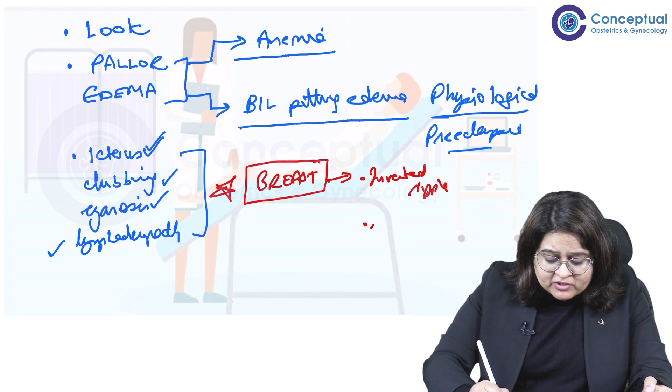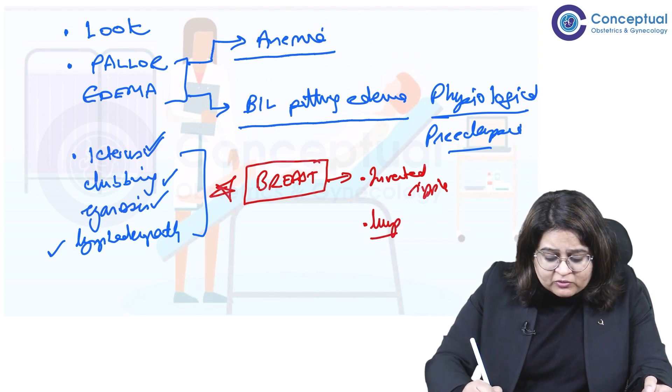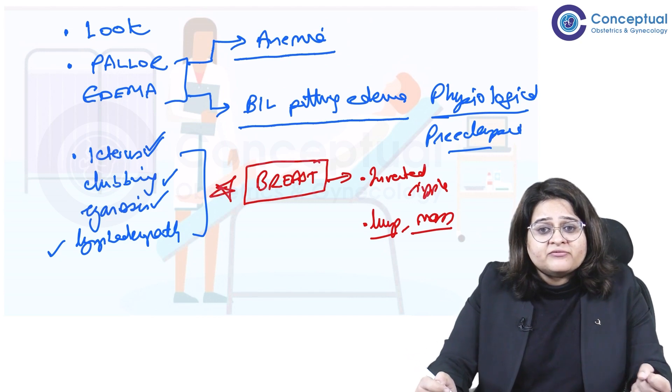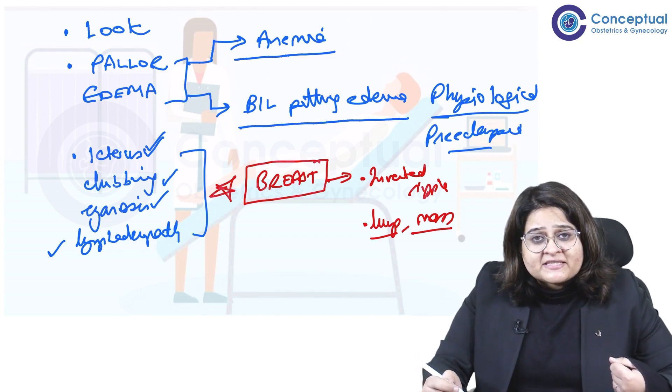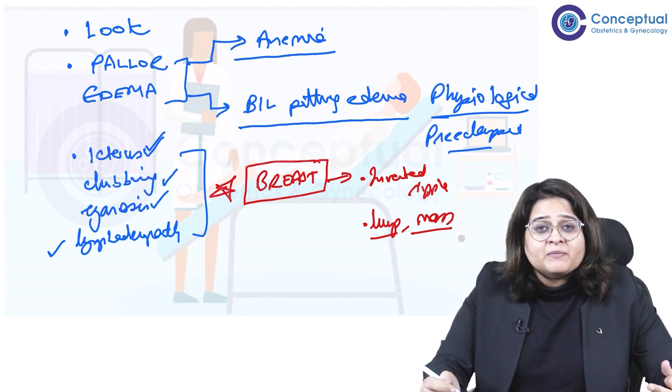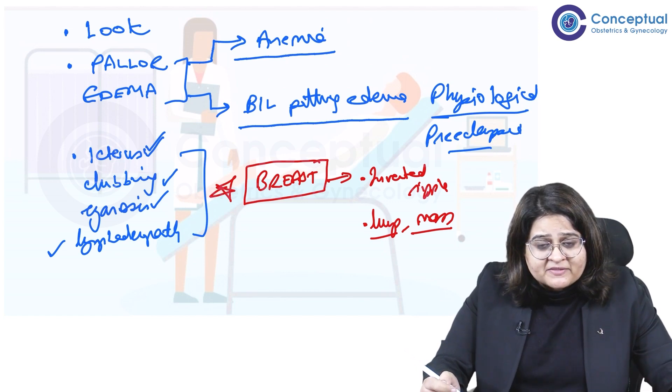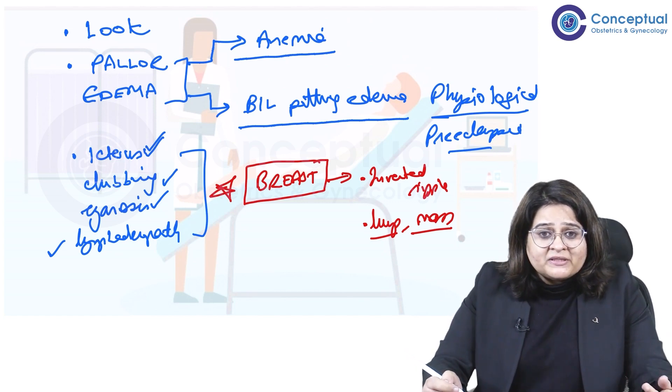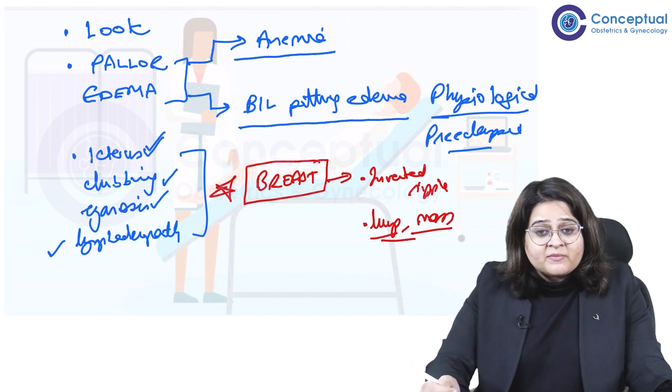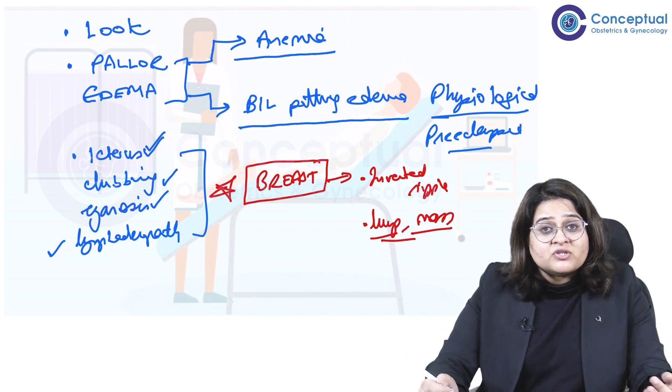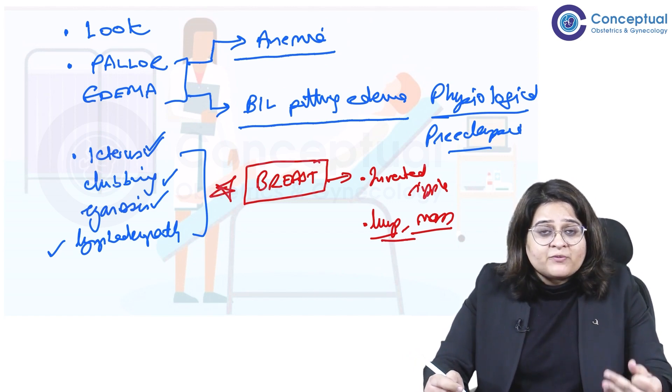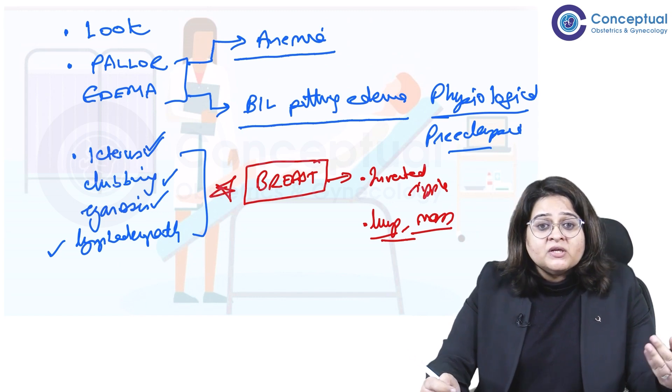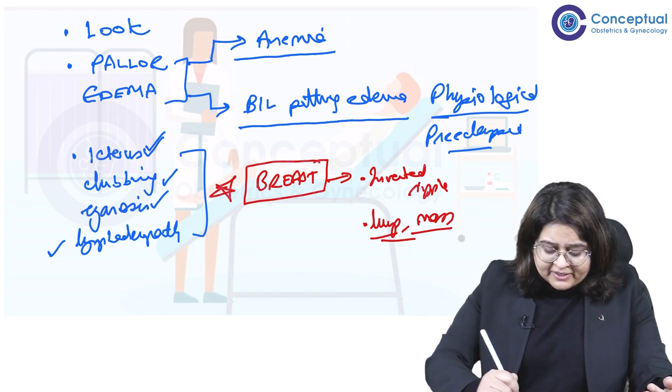Also, you have to of course examine the breast in total. Look for any lump or palpable mass or any axillary lymphadenopathy. There may be an axillary tail of the breast which may become engorged during breastfeeding. So these things should be there. Many times, in fact, we have diagnosed breast cancer during pregnancy because that's the time we've examined and found a lump. So very important to look at the breast.